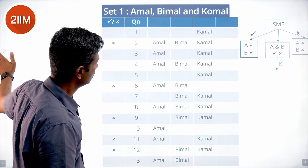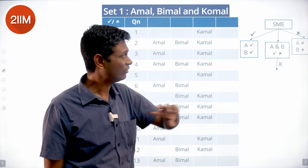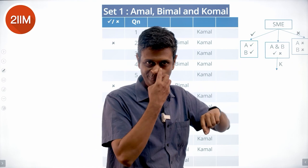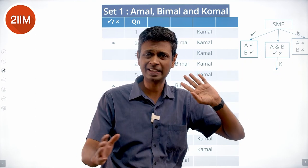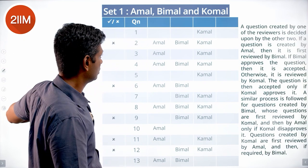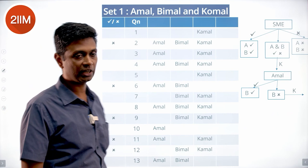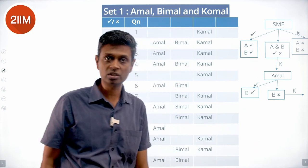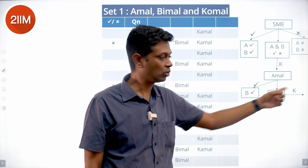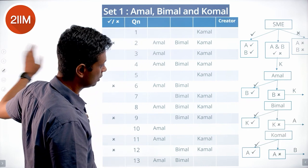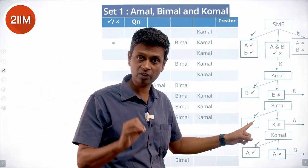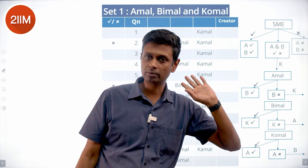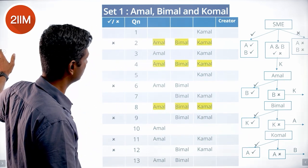Quick recap of the mechanism: if an SME creates a question, Amal and Bimal both review it; if both approve it's accepted, if both reject it's rejected, and if split it goes to Komal. If Amal creates it, Bimal reviews first; if Bimal approves it's accepted, if Bimal rejects it goes to Komal. If Bimal creates it, Komal reviews first; if Komal disapproves it goes to Amal. If Komal creates it, Amal reviews first; if Amal rejects it goes to Bimal.